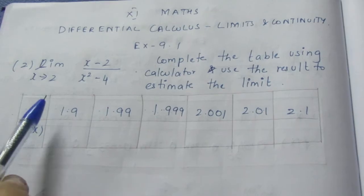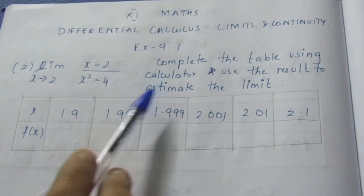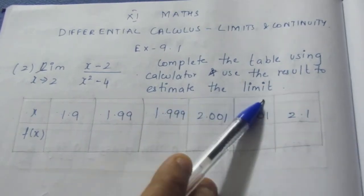Question is: limit x tends to 2, x minus 2 by x squared minus 4. Complete the table using the calculator and use the result to estimate the limit.